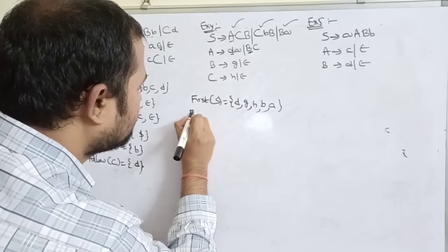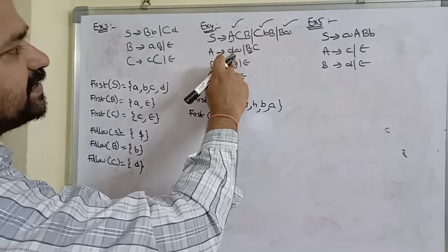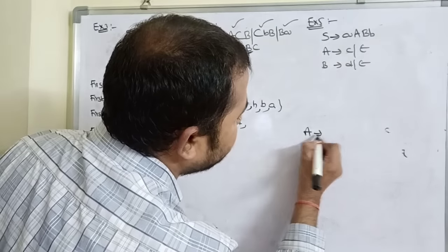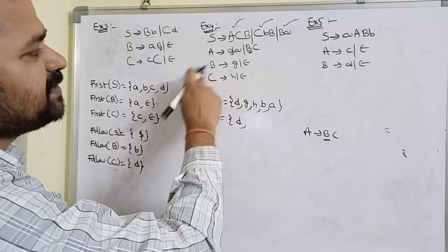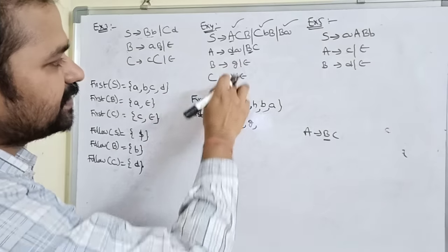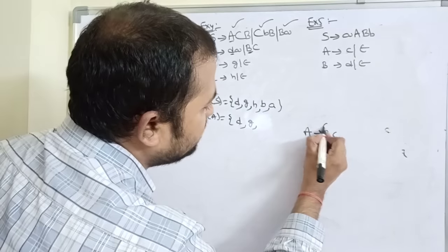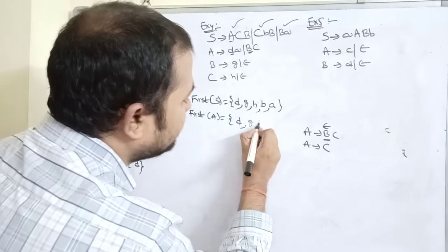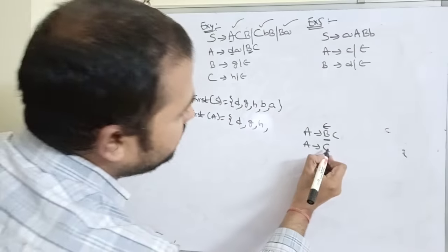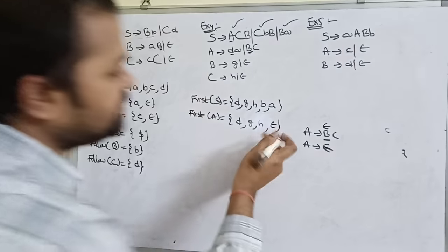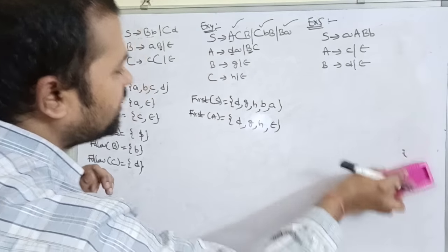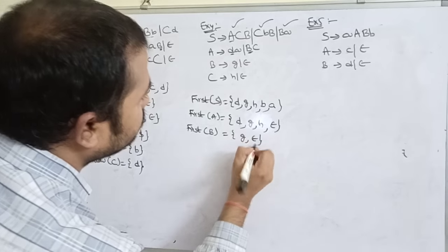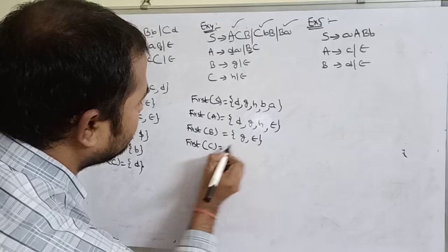FIRST of A = {d, g, h, epsilon} (from A implies d·A starting with d; and A implies B·C where FIRST of B = {g, epsilon}, substituting B with epsilon gives C, FIRST of C = {h, epsilon}, substituting C with epsilon leaves epsilon). FIRST of B = {g, epsilon}. FIRST of C = {h, epsilon}.